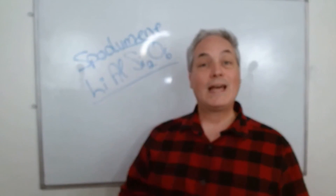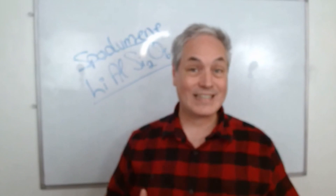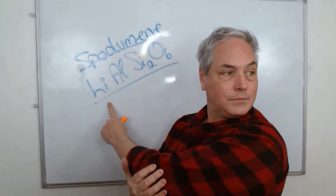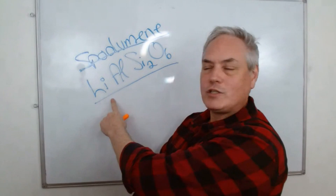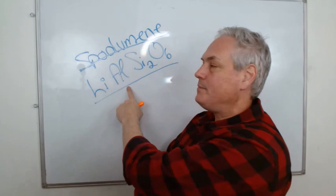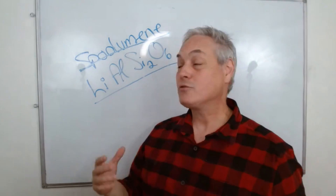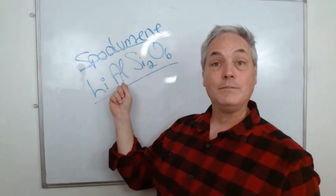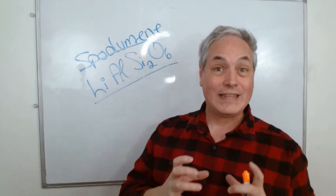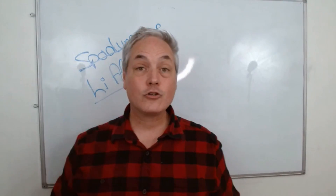Spodumene is called a lithium aluminum silicate. We have lithium — the metal we're looking for — along with aluminum, silica, and oxygen. The Earth's crust is full of aluminum, silicon, and oxygen, but what is interesting about that place is that it contains an increased quantity of lithium.